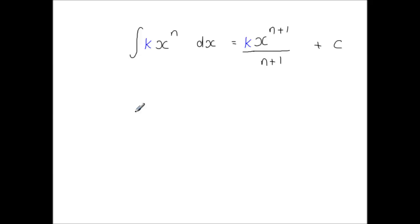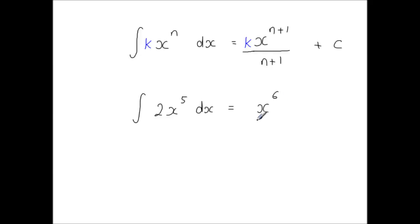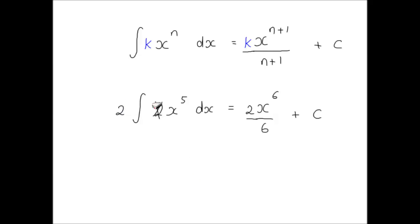For instance, if we're integrating 2x to the power of 5 dx, ignoring that 2 — the constant you're multiplying by — you get x to the power of 6, because you're adding 1 to the power, then divide by the new power, plus the constant of integration C. And that 2 multiplies right here, and then you can cancel this down. Because we're multiplying by 2, I could remove it from there and write it on the outside — that doesn't change anything, you still get the same answer.